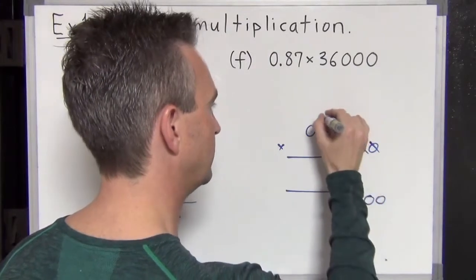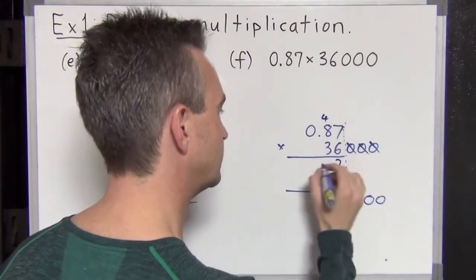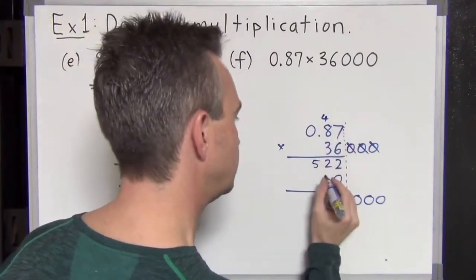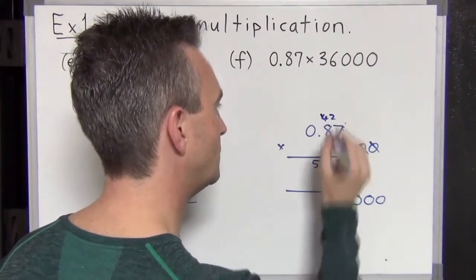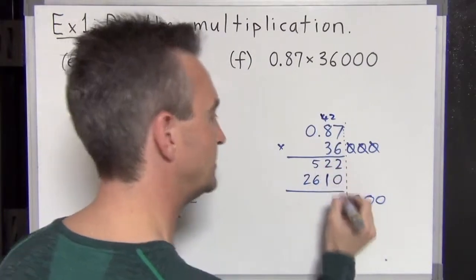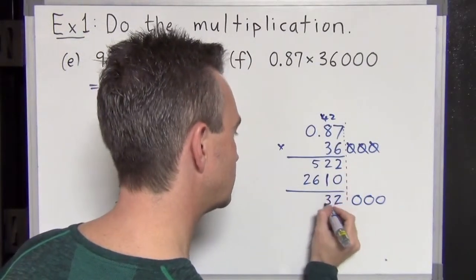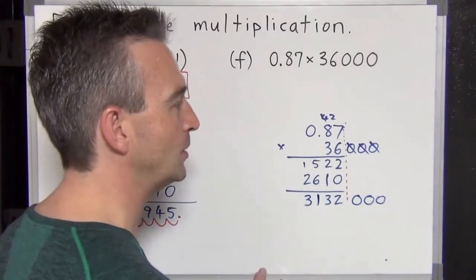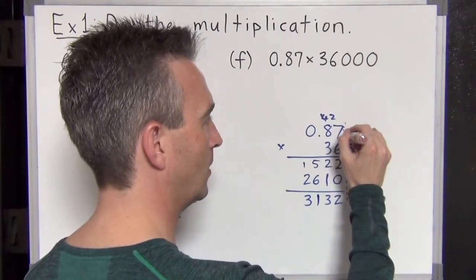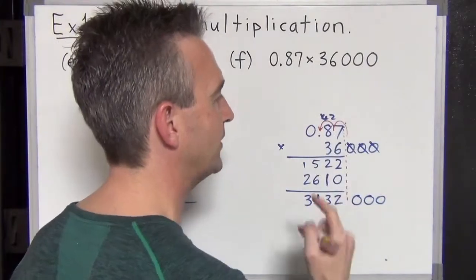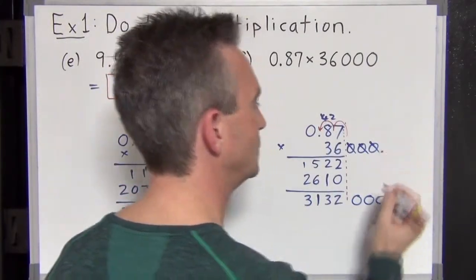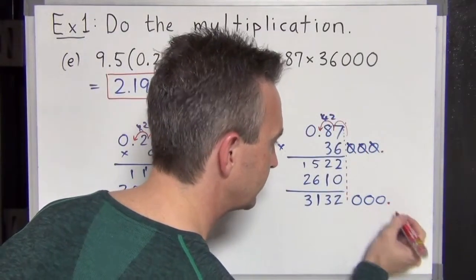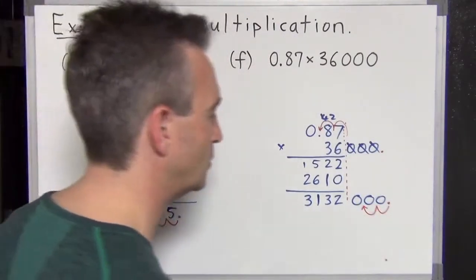Six, sevens are 42. Two goes down, carry the four. Six, eights are 48 plus four is 52. Coming down the second row, we put a zero. Seven, three eights are 24 plus two is 26. Let's add these two plus zero. Two plus one is three. Five plus six is 11. And then one plus two is three. How many decimal points in the final answer? Let's count them. Starting from here. One, two. And in the 36,000, the original decimal point was here, which is zero decimal places. So we just got one, two. Down here, let's do that. Starting here. One, two. And that's where our decimal point goes.